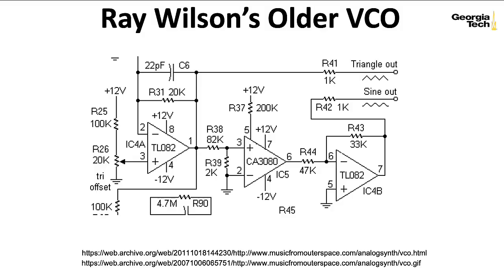So in this lecture, I'm just going to present a menagerie of different triangle-to-sine wave shapers. I'm not going to analyze any of these in detail — I just want to give you a general overview so that you recognize these kinds of circuits when you run across them. So continuing our look at Ray Wilson's VCO, we saw that he generated a sawtooth wave, turned it into a triangle wave, and then we have the circuitry that transforms the triangle wave into a sine wave.